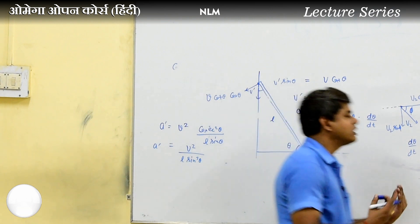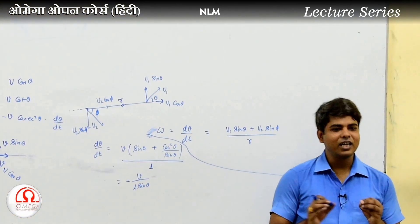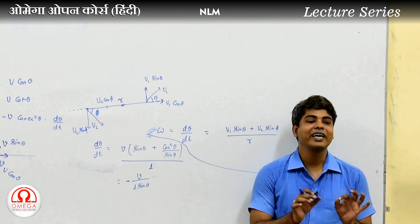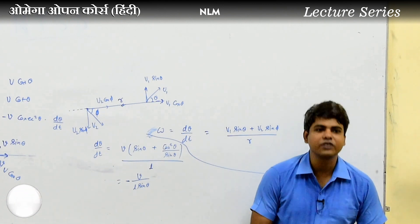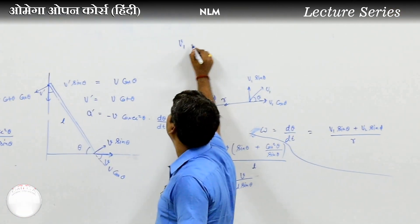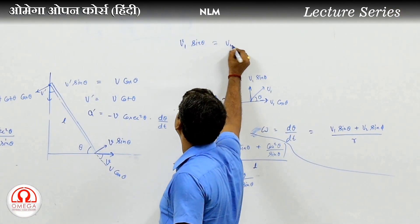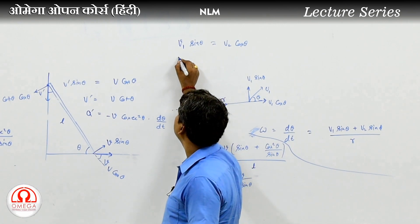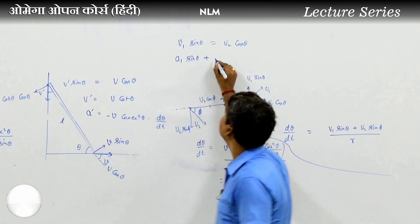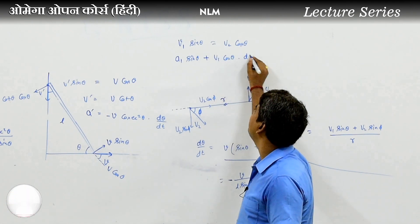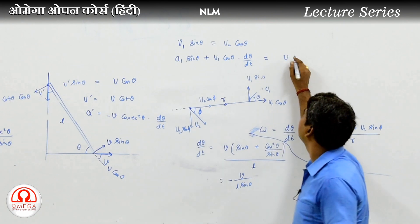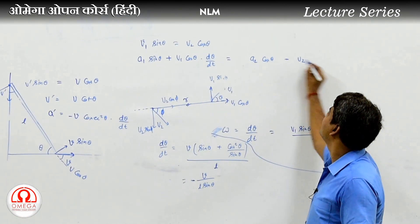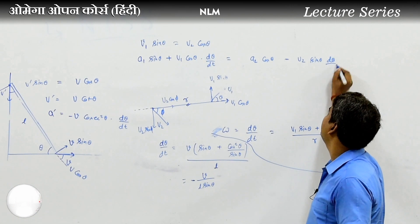The velocity of a' will be negative because theta is decreasing. You will get the value of dθ/dt. Where calculus is involved, if you have the relation v1 sin theta equals v2 cos theta, differentiating gives: a1 sin theta plus v1 cos theta into dθ/dt equals a2 cos theta minus v2 sin theta into dθ/dt.